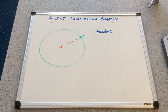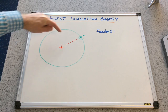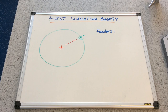Before we start looking at the trends in the groups and across the periods, we'll just think about the factors that would influence the amount of energy required to get this electron out. So if you pause the video now and have a think about those factors, we'll go through the answers in a moment.